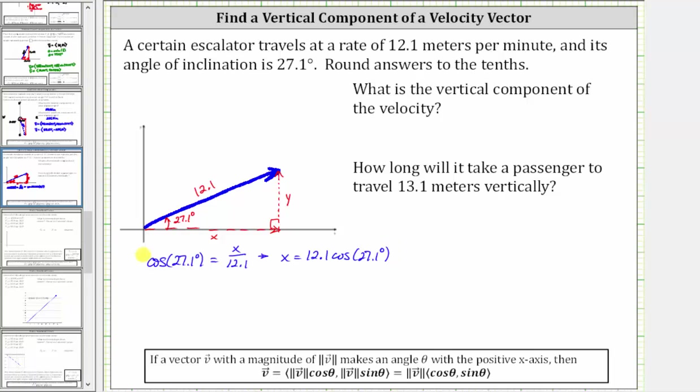Similarly, we can state that the sine of 27.1 degrees is equal to the ratio of the opposite side to the hypotenuse, which is y divided by 12.1. Solving for y, we have y equals 12.1 times sine of 27.1 degrees.